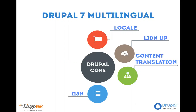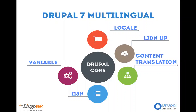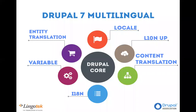So you also download and enable the i18n module suite, which comes with several modules including features for menu translation, taxonomy term translation, etc. That gives a lot more flexibility, but all the emails sent to your users will still be in the site's language — they are not possible to translate with either of those modules. So you also download the variable module suite, which deals with configuration on Drupal and lets you translate emails sent to users, the site name, slogan, etc.